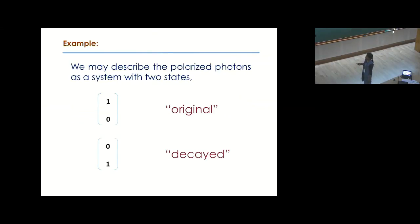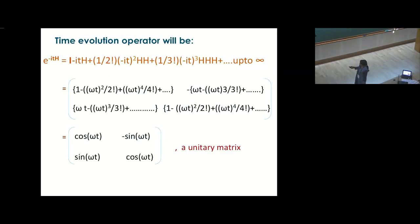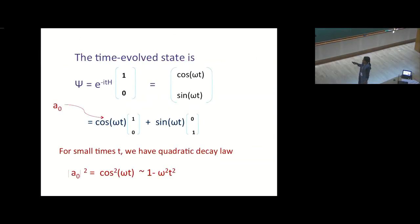Let us have a few examples. Suppose we have two polarized photons at the system with two states: one zero as original and zero one as decayed. Let us choose the effective Hamiltonian in terms of Pauli spinor. If I expand the time evolution operator in terms of Taylor series and include H as this one, I will get a unitary matrix. If I operate it on the initial state, I will get cos omega t and sin omega t. This can be written as cos omega t initial state and sin omega t final state. For small times, we have quadratic decay law here again.